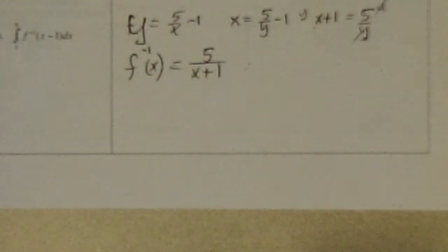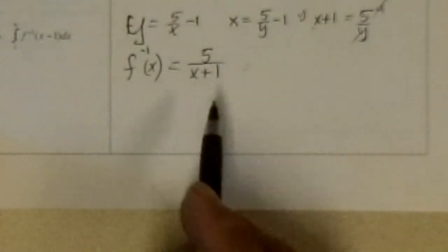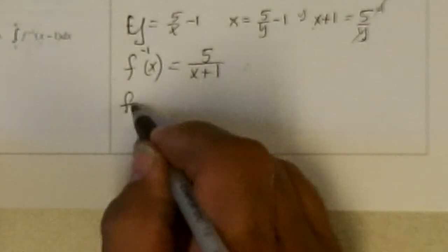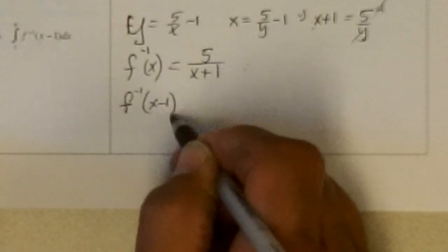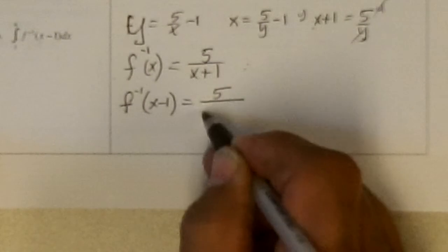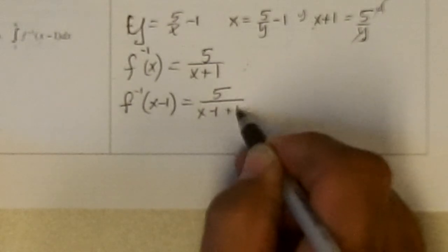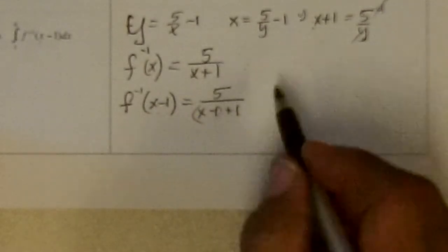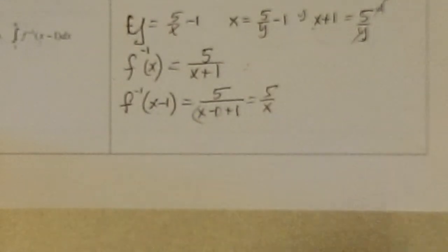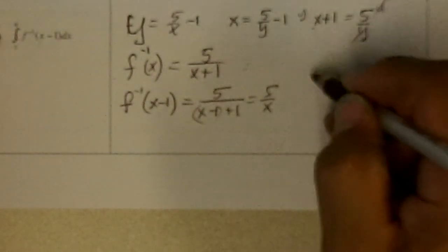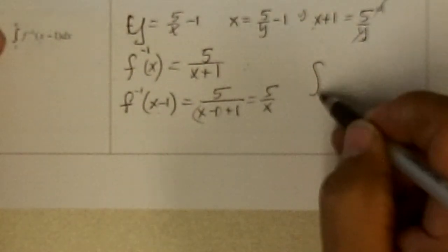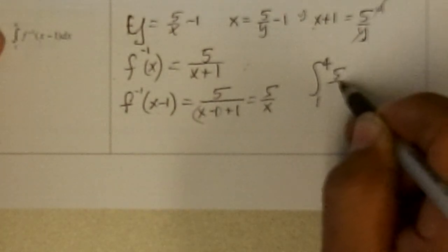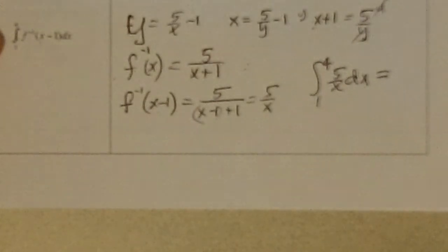That's f inverse, now they say to put in x minus 1 into this, so f inverse of x minus 1 is 5 over x minus 1 plus 1, that's putting x minus 1 plus x, those cancel out, and I get 5 over x. And so, I'm supposed to integrate that from 1 to 4 of 5 over x dx.